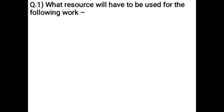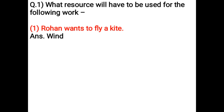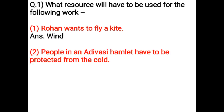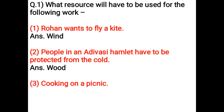What resource will have to be used for the following? Rowan wants to fly a kite — Wind. People in an Adivasi hamlet have to be protected from the cold — Wood. Cooking on a picnic — Wood, Coal.